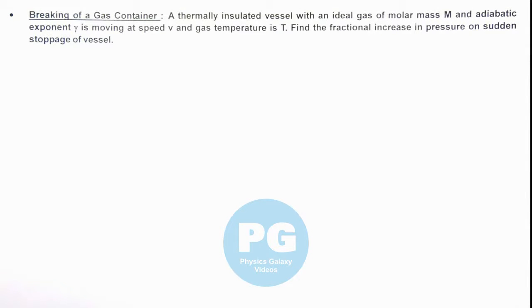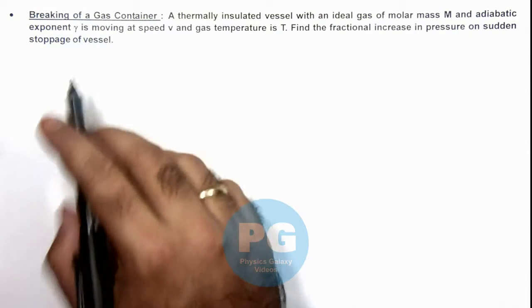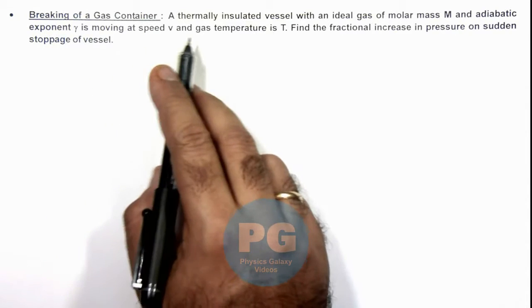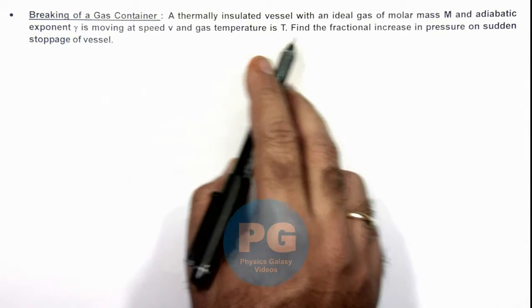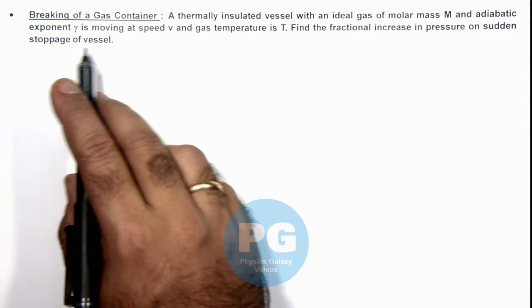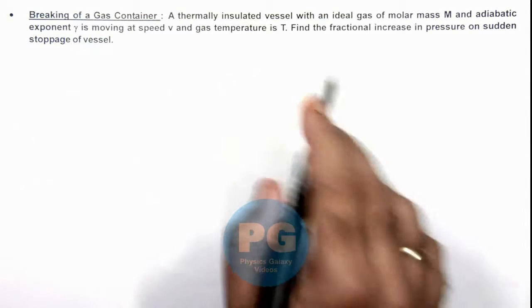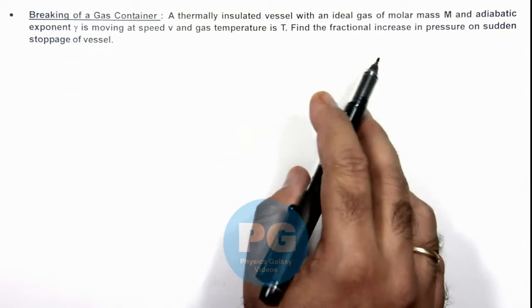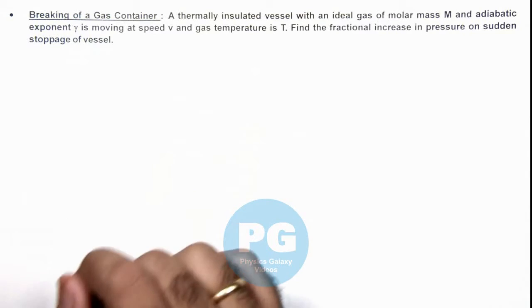In this illustration we'll analyze the breaking of a gas container. We are given that a thermally insulated vessel with an ideal gas of molar mass M and adiabatic exponent gamma is moving at speed v and gas temperature T. We are required to find the fractional increase in pressure on sudden stoppage of vessel.